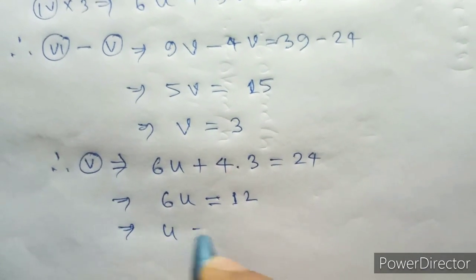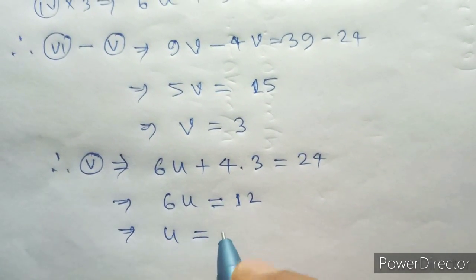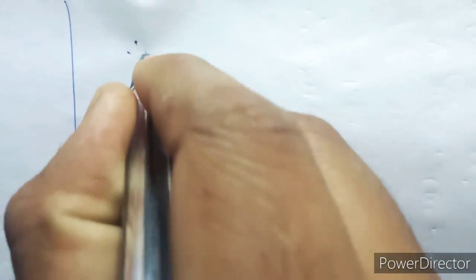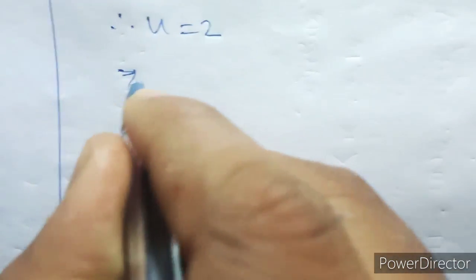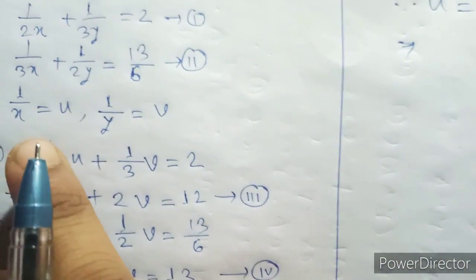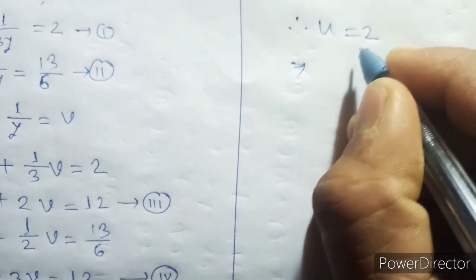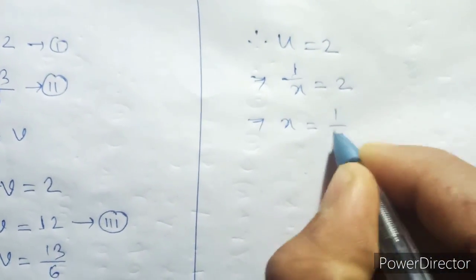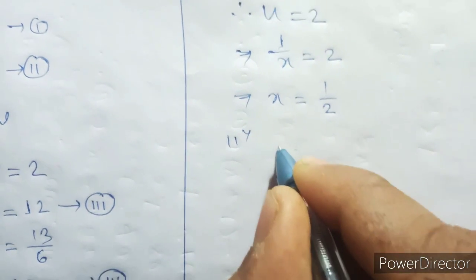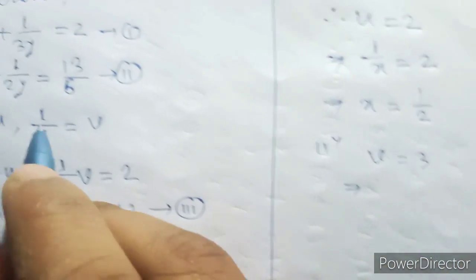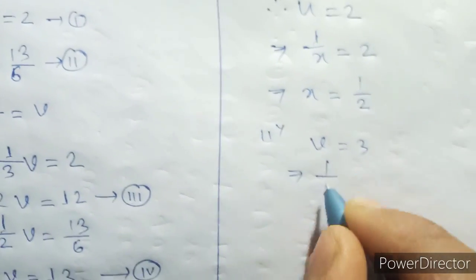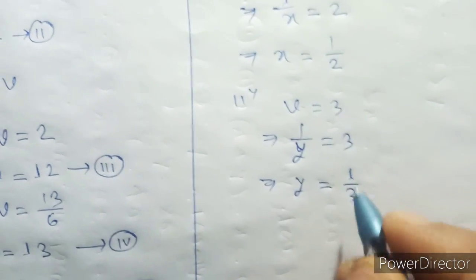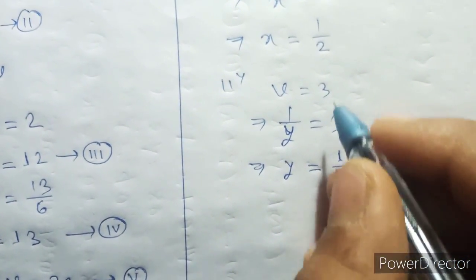So here we say U equal to 2. We had 1 by X equal to U, so 1 by X equal to 2 implies X equal to half. Similarly, we had 1 by Y equal to V, so 1 by Y equal to 3 implies Y equal to 1 by 3.